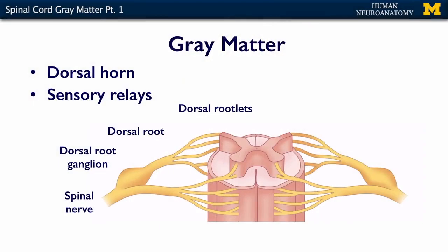The gray matter of the spinal cord — the dorsal aspect, the dorsal horn — is a sensory relay. We name all of the things within this zone as dorsal. Information is coming in from the periphery through nerve endings. Sensory information comes in through the spinal nerve, and its cell body lives in the dorsal root ganglion, where all of your primary sensory neurons are located. This is its peripheral process, picking up information from the periphery, and then this is its central process. It goes through the dorsal root, into a dorsal rootlet, and then into the dorsal horn. So: dorsal root ganglion, dorsal root, and then the dorsal rootlets. All of this is sensory.